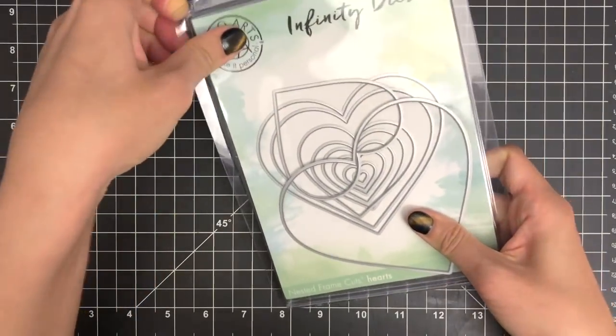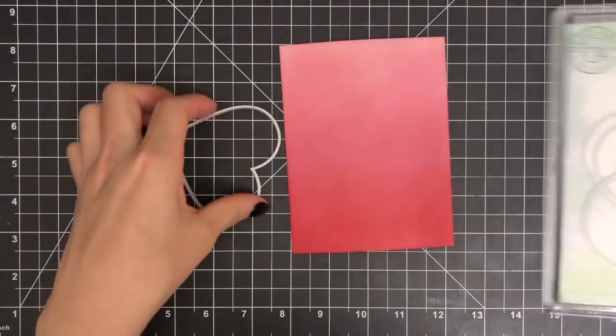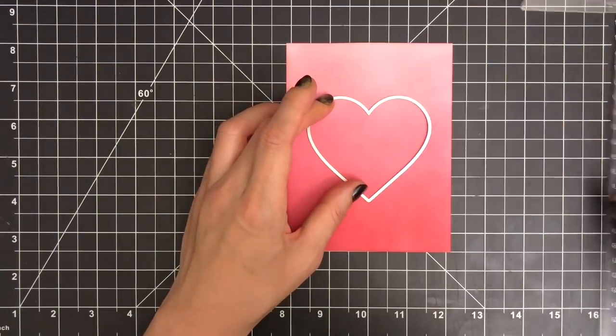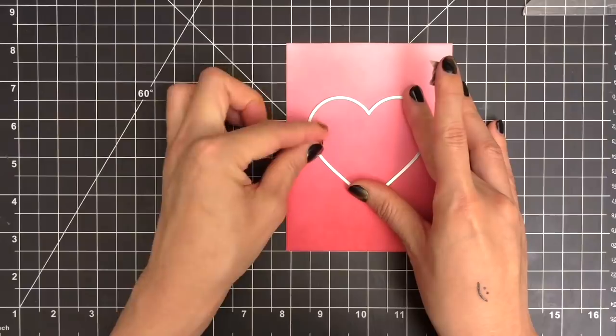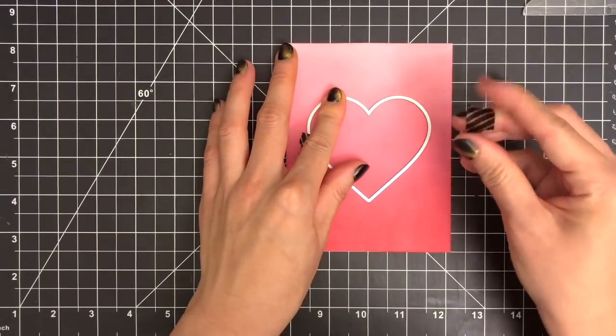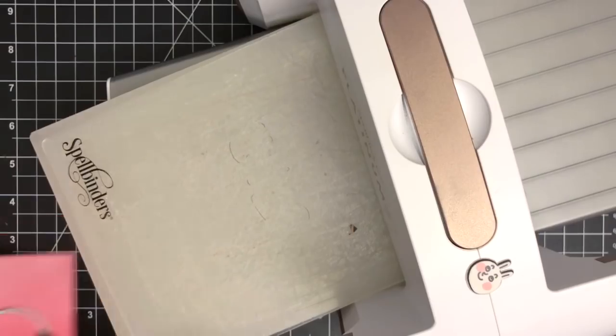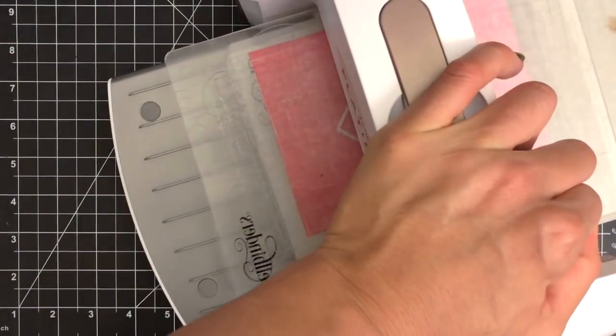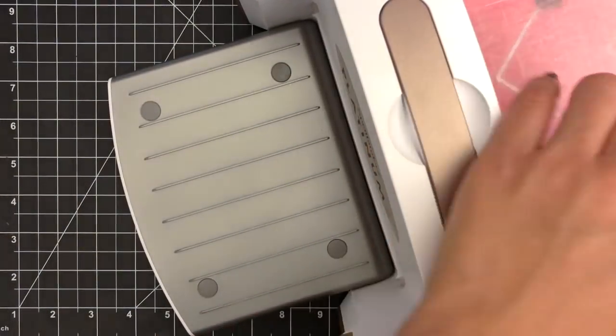I'm going to pull out the medium sized die from Hero Arts Nesting Hearts Infinity Die Set and place the die and secure it on my inked panel using washi tape so it doesn't move while die cutting. After placing my die and paper between cutting plates, I'll be running them through my Spellbinders Platinum die cut machine.